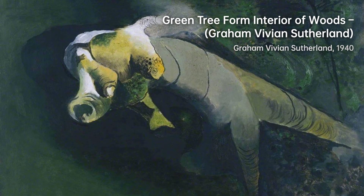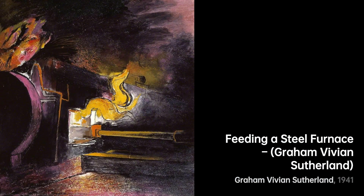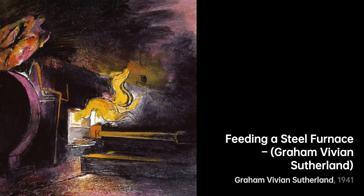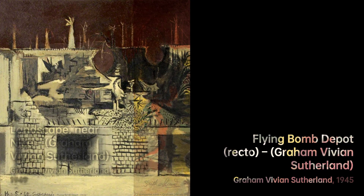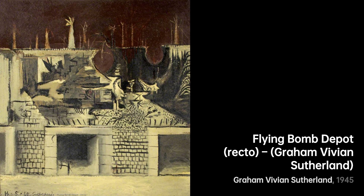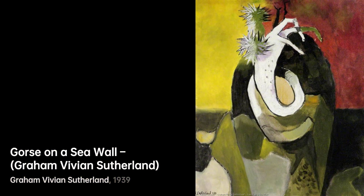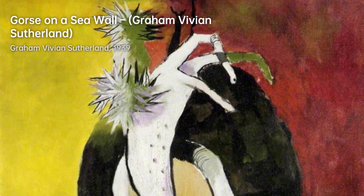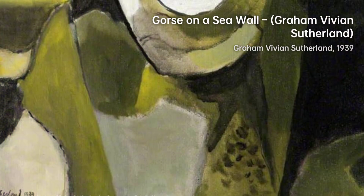During his early career, Sutherland experimented with various art forms, including printmaking and book illustration. However, it was his landscape paintings that gained him recognition. Inspired by the British countryside, Sutherland captured the essence of nature with his unique style and use of color. His artworks, such as Black Landscape and Welsh Landscape with Roads, showcased his ability to depict the beauty and tranquility of the natural world.